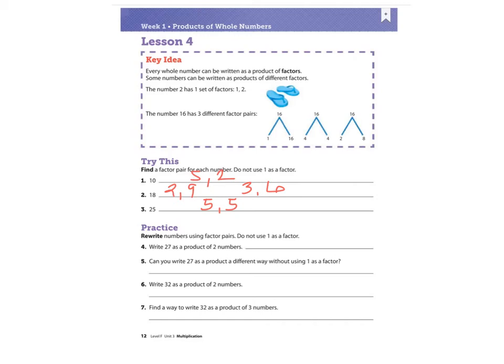The next part says rewrite numbers using factor pairs, again not using the number one. Write 27 as a product of two numbers — so 27 is our answer. Nine times three equals 27. Can you write 27 a different way without using one? No, because three and nine are the only factor pairs, so we cannot write it another way.